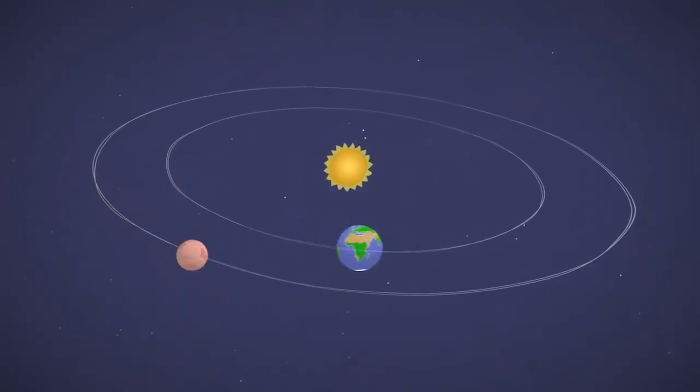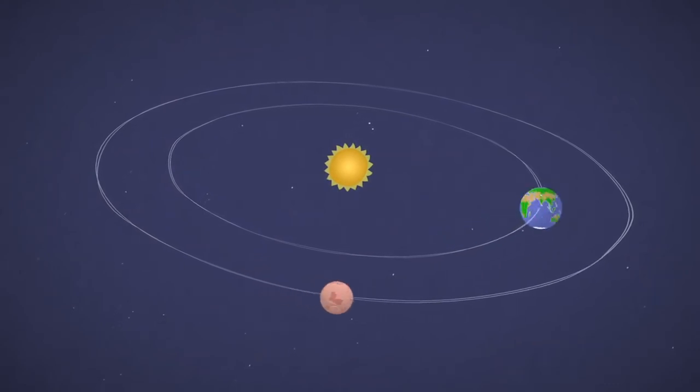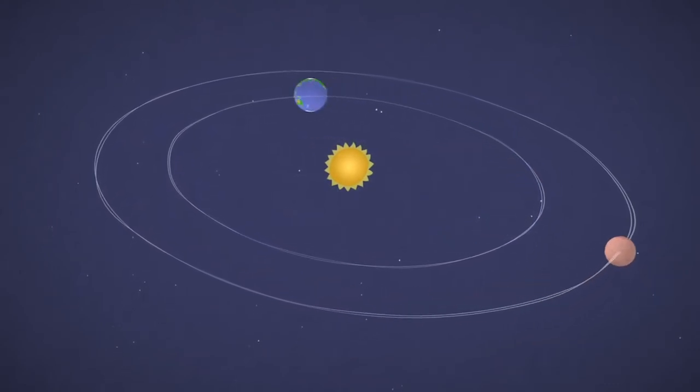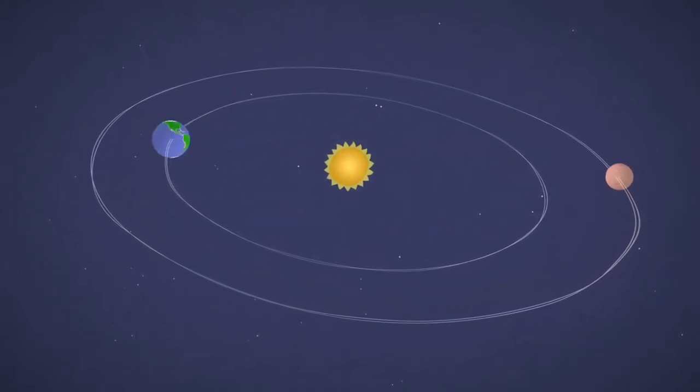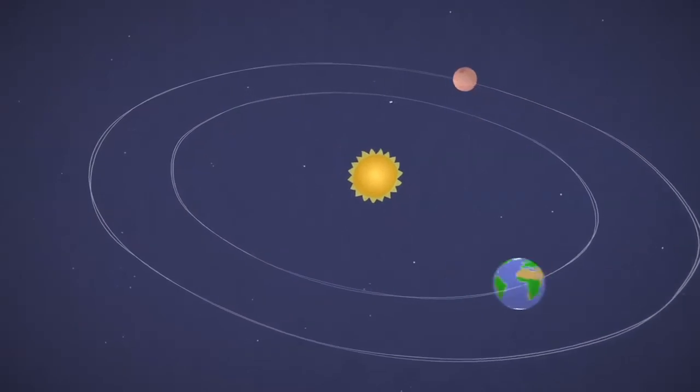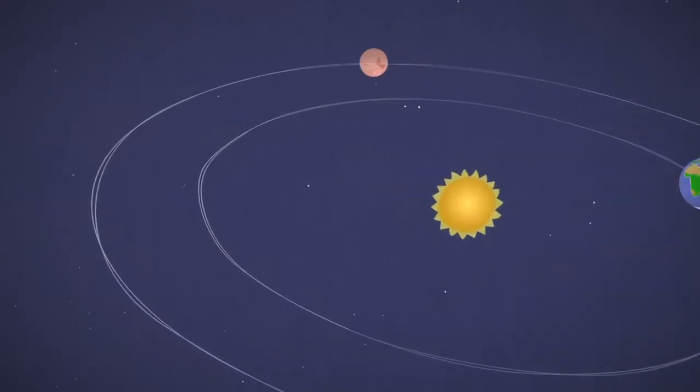So what happens if we miss our launch period? Well, if you miss your launch period, you have to wait for the next opportunity to launch to Mars. And because of how Earth and Mars orbit the Sun in our solar system, they're only aligned once every 26 months for us to send a spacecraft to Mars. So if you miss your launch period, you have to wait an awful long time to try again.